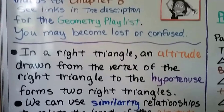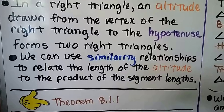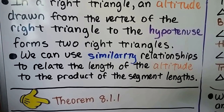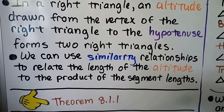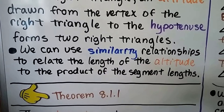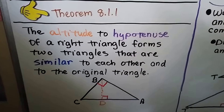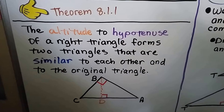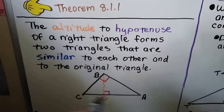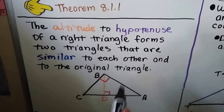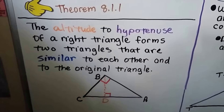In a right triangle, an altitude drawn from the vertex of the right triangle to the hypotenuse forms two right triangles. We can use similarity relationships to relate the length of the altitude to the product of the segment lengths. Theorem 8.1.1: the altitude to the hypotenuse of a right triangle forms two triangles that are similar to each other and to the original triangle.